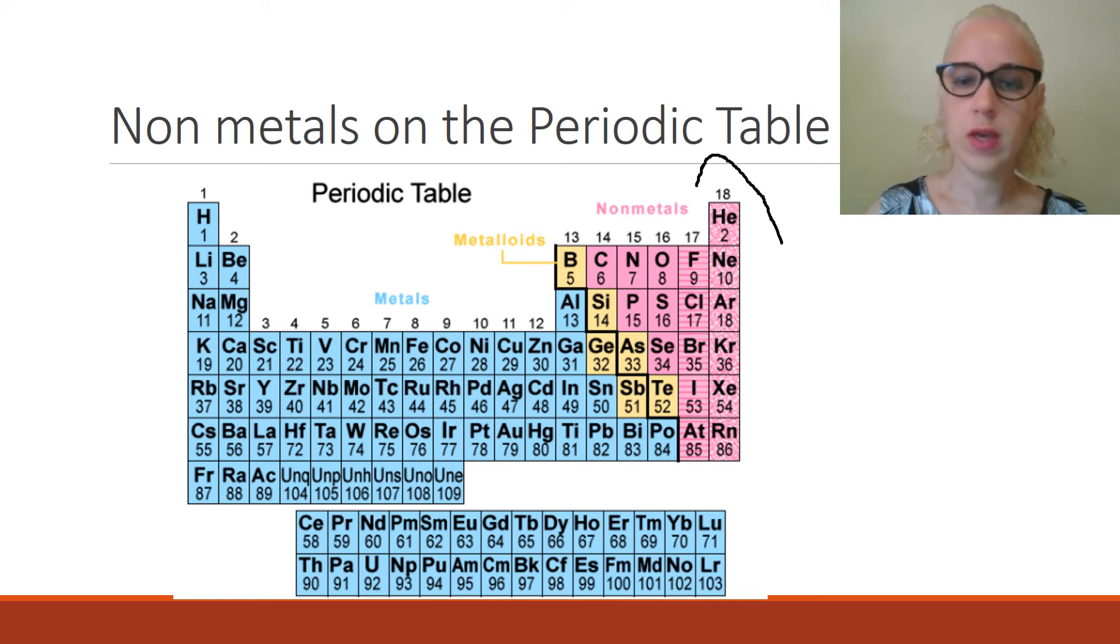This group here is the halogens, which is fluorine, chlorine, bromine, iodine, and astatine. And then the other non-metals is this little group of six guys here, where we've got carbon, nitrogen, oxygen, phosphorus, sulfur, and selenium, and hydrogen sitting over there.